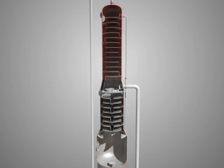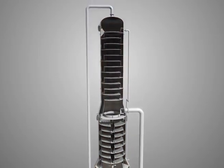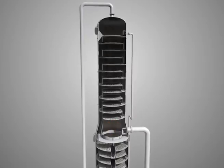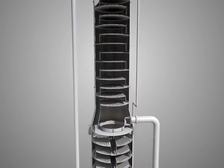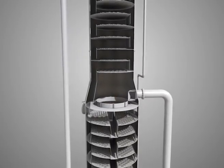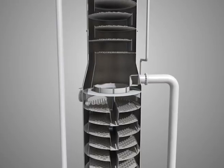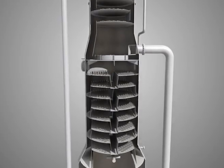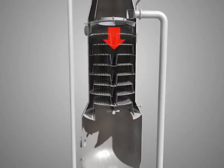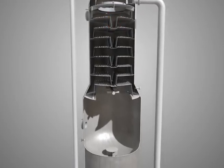In the downcomer, the vapor separates from the froth, leaving a pool of disengaged liquid in the downcomer below the level of the active tray surface. The disengaged liquid enters the next tray under the force of its hydrostatic head, independently of the forces that create the froth and move the froth across the tray.